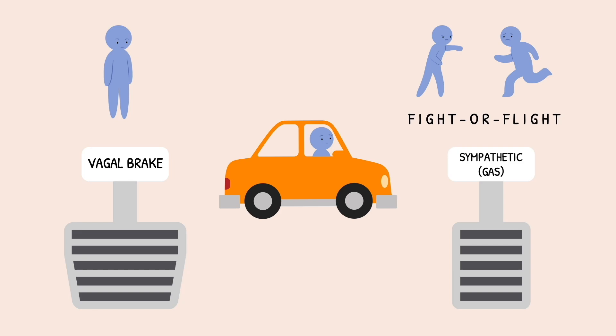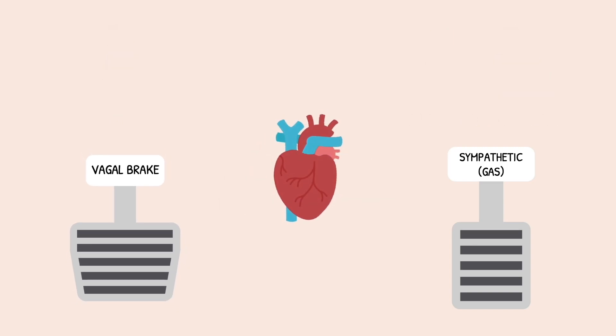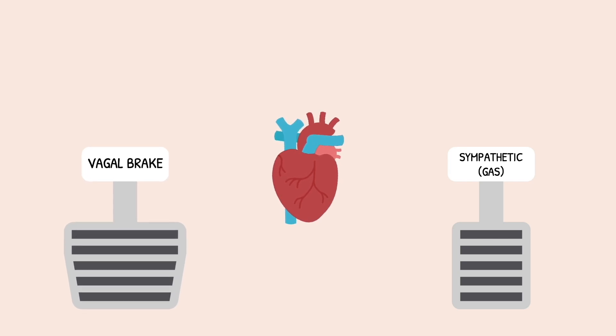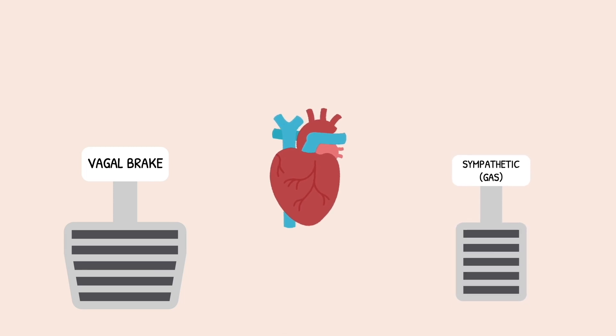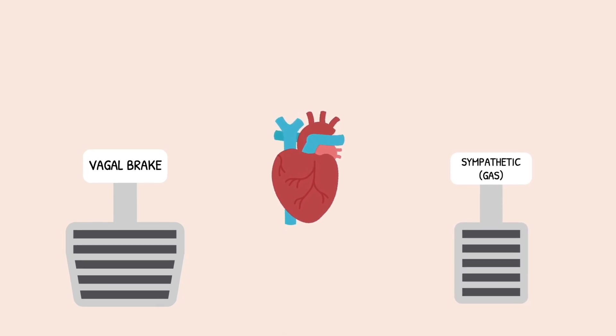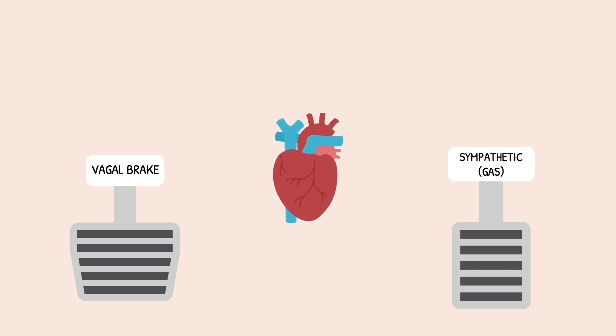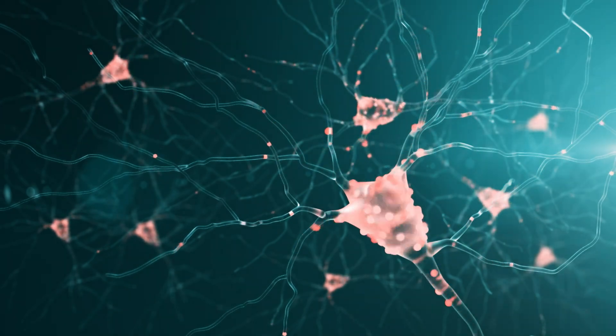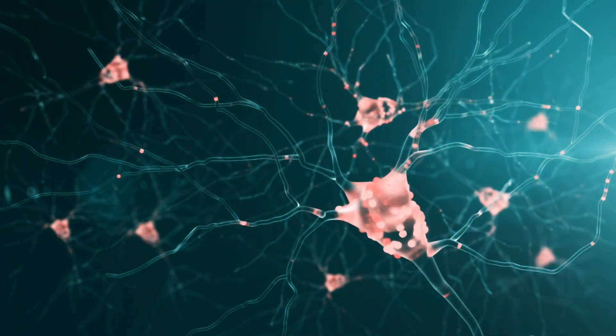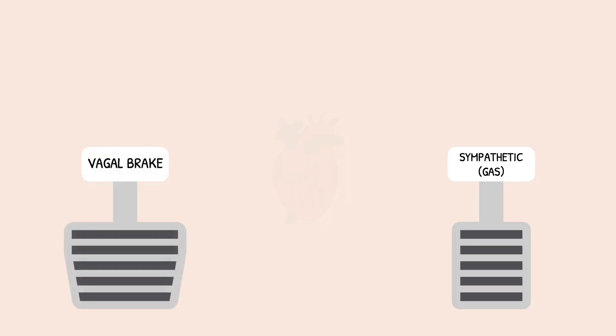Just like driving, you're not meant to slam the gas or the brake all the time. You continuously balance them to control your speed. The vagal brake allows some sympathetic energy through when needed, while preventing the system from spinning out of control. When the brake relaxes, the heart and body speed up. When it re-engages, the body slows back down again, like letting off the gas and pressing the brake. And unlike a real car, all of this happens through electrical signals and neurotransmitters instead of mechanical parts.